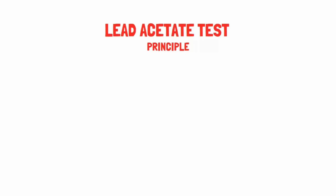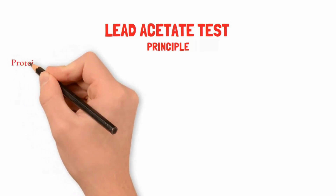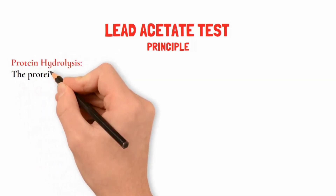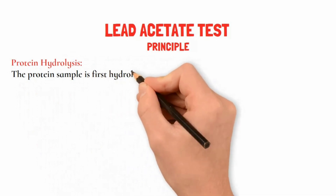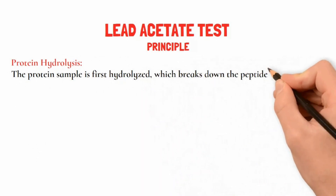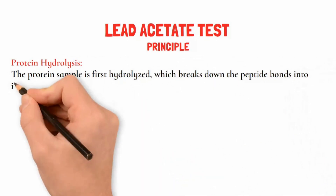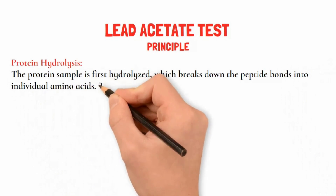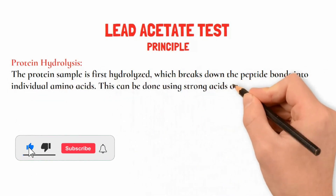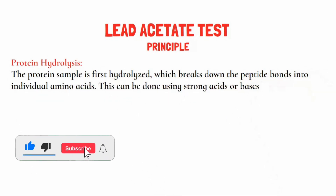Now we'll see the principle of the test. First, protein hydrolysis occurs — the protein sample is first hydrolyzed, which breaks down the peptide bonds into individual amino acids. This can be done using strong acids or a base; in this case we are using 40 percent NaOH.